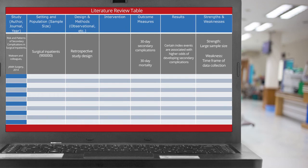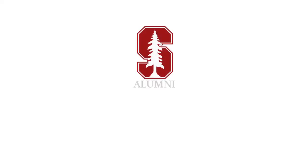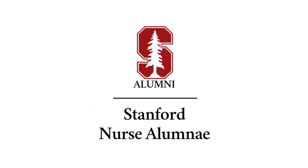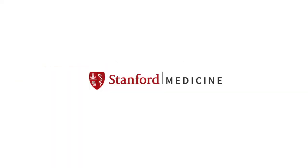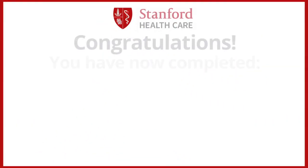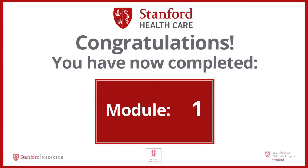As we have seen, using a checklist and literature review table is a simple and organized way to verify the overall quality of a journal article. This education series is made possible by a generous gift from the Stanford University School of Nursing alumni, in collaboration with Stanford Healthcare, Lucille Packard Children's Hospital, and Stanford Medicine. Congratulations! You have completed Module 1.